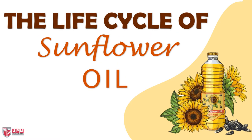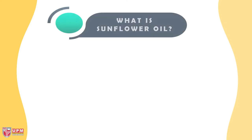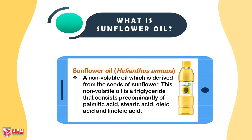What is sunflower oil? Sunflower oil, with the scientific name Helianthus annuus, is a non-volatile oil derived from the seeds of the sunflower. This non-volatile oil is a triglyceride that consists predominantly of palmitic acid, stearic acid, oleic acid, and linoleic acid.